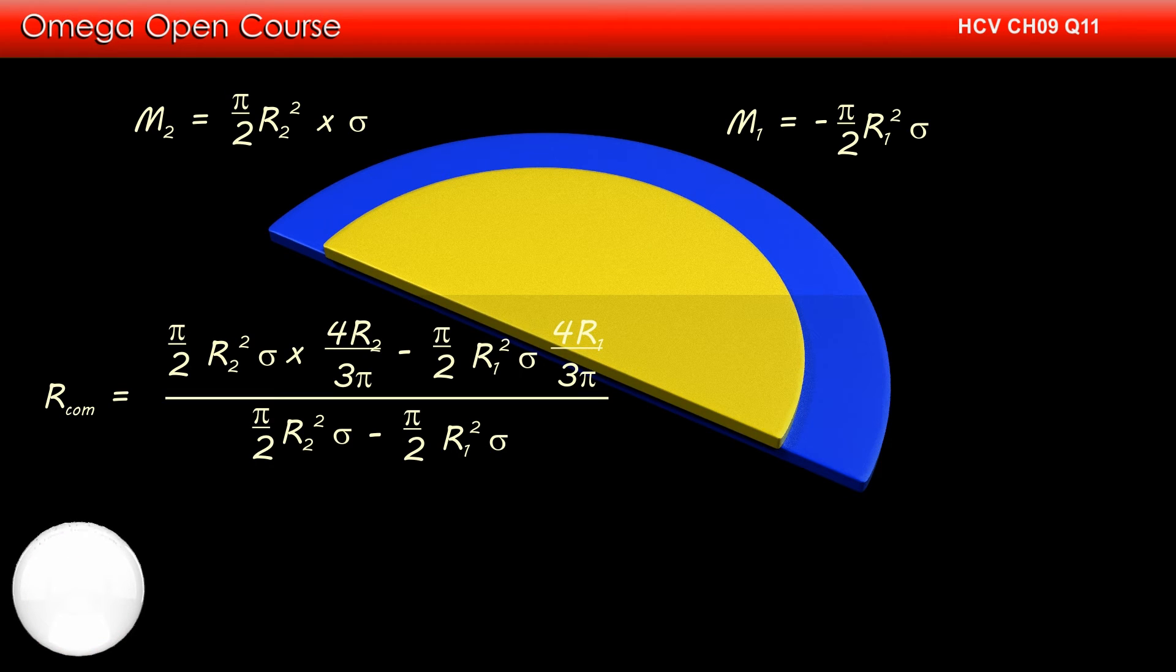Thus, the distance of center of mass from the center of disk is (π/2 × R2² × σ × 4R2/3π - π/2 × R1² × σ × 4R1/3π) / (π/2 × R2² × σ - π/2 × R1² × σ).